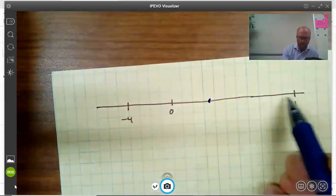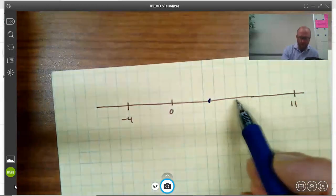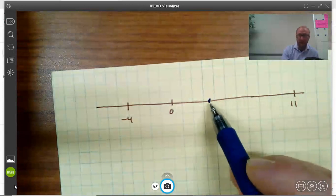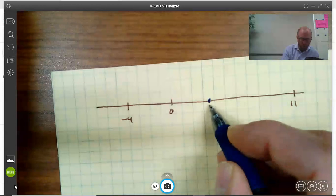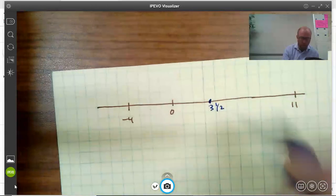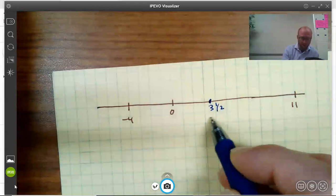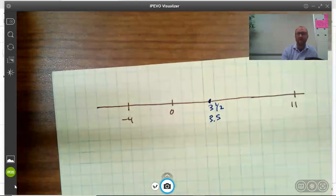And let's just check from the other direction. 1, 2, 3, 4, 5, 6, 7 and a half. Let's see what number that is. That is 1, 2, 3 and a half. Or I could write that as 3.5 if I wanted to.